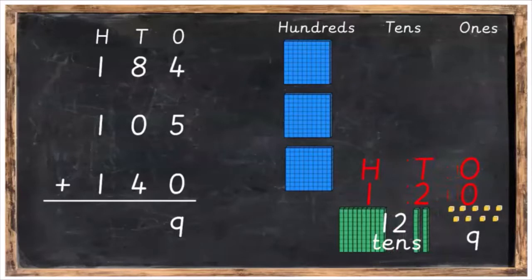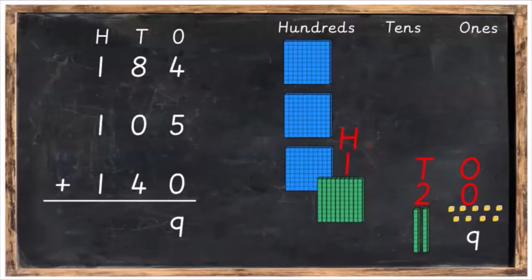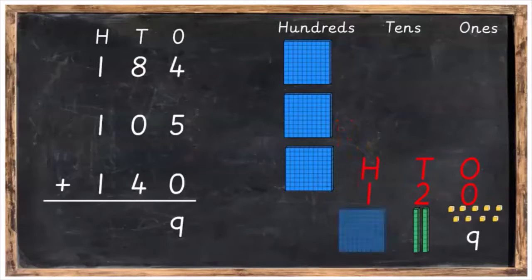So now we've got 100, we've got two tens, and zero ones. Now that hundred there doesn't belong in the tens column. So there's two things we can do. We can either move it into the hundreds column, just like that, or we can swap it for a blue hundred and then move it into the hundreds column.